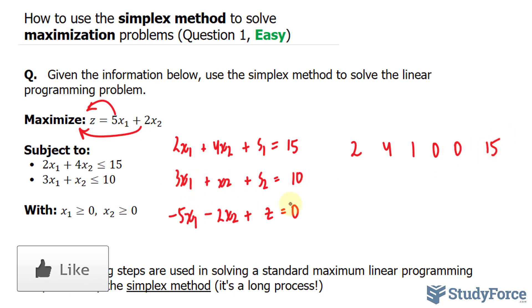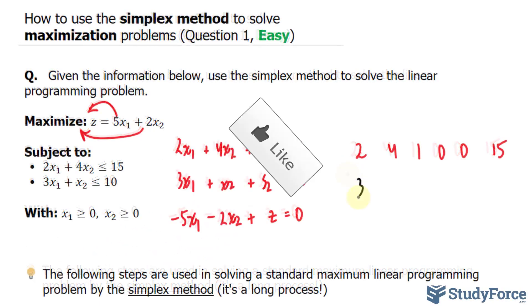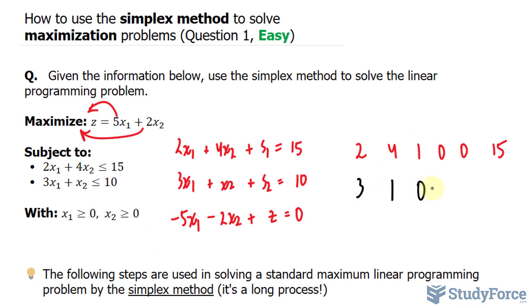For this, you'll write down 3, 1, no s sub 1 here, so it's a 0, 1, 0, and 10. For this equation, negative 5, negative 2, no s1, no s2, but you do have z, it's 1, and that's equal to 0.